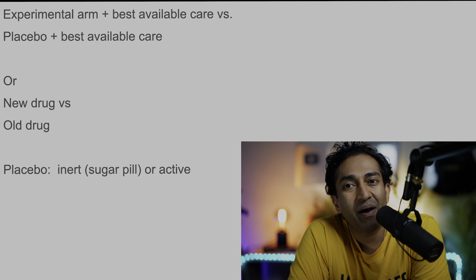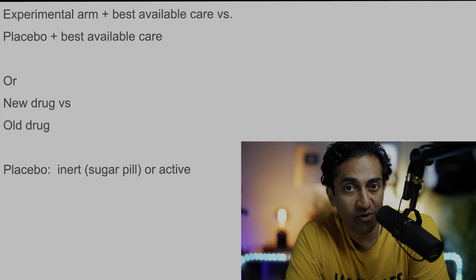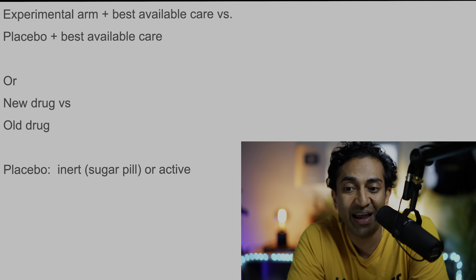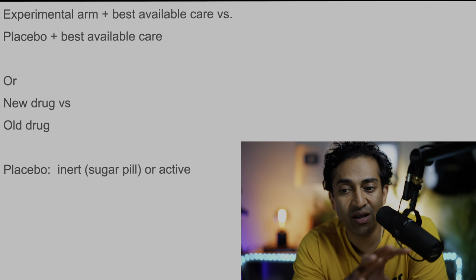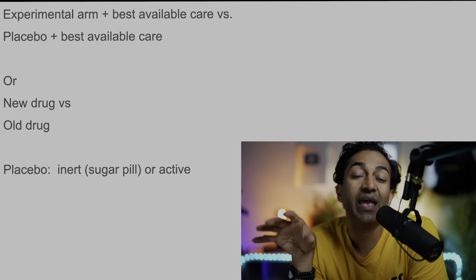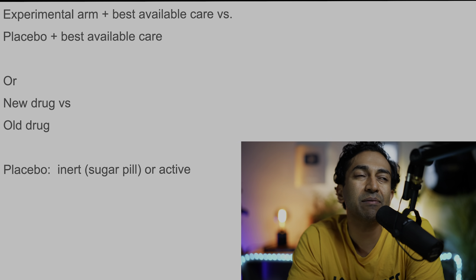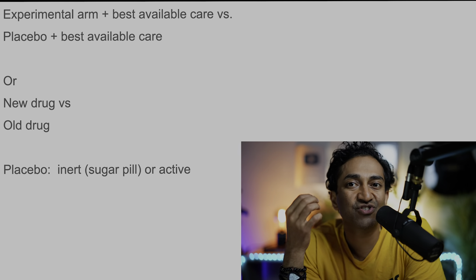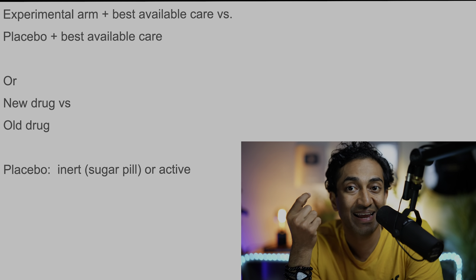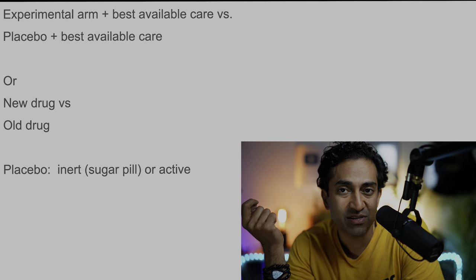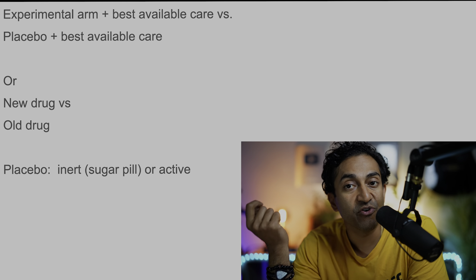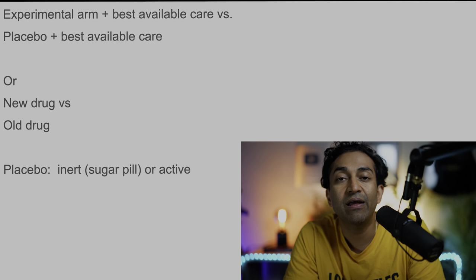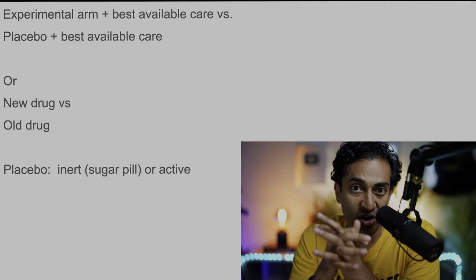I want to first start by giving you a broad overview of randomized controlled trials. There are many different designs in a randomized study. One commonly used design is the experimental drug plus the best available care versus a placebo plus the best available care, where many people will think that placebo is an inert placebo — something like a sugar pill that gives the appearance of the drug but doesn't contain any active ingredients.